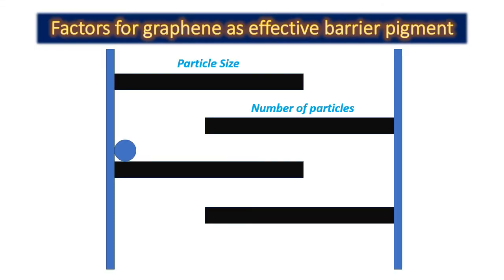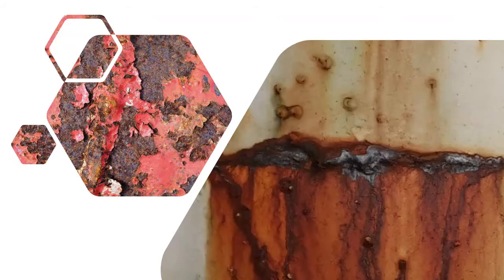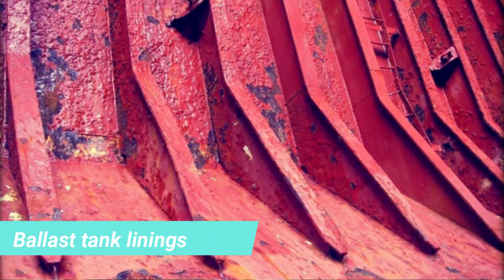There is yet another factor very important for the corrosion resistance of a coating: the adhesion of the coating to the metal substrate. A coating can be a very good barrier, but it must also have good adhesion to the substrate. This is particularly necessary to prevent the spread of corrosion around damaged areas, as coatings undergo a variety of mechanical stresses such as erosion, abrasion, impact stress, and thermal stress.